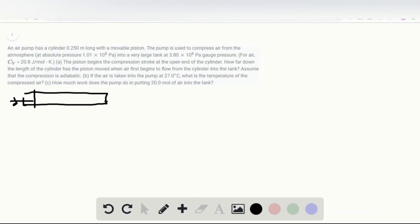So we want to pump the air inside this pump from initial pressure of 1 atmosphere to 3.8 times 10 to the fifth pascals. So let's see how far down the length of the cylinder has to move.